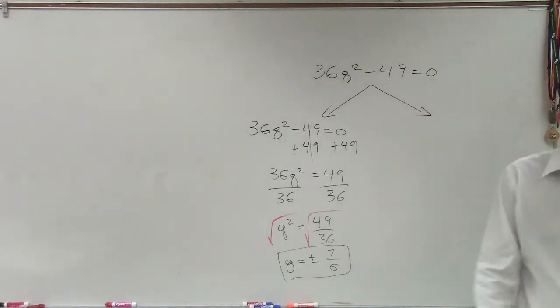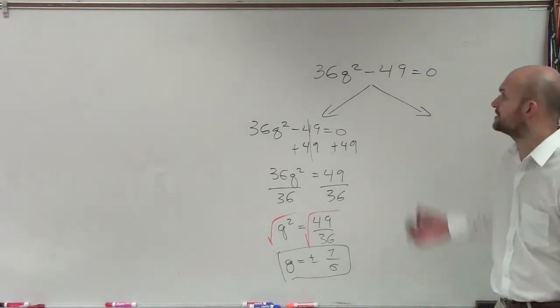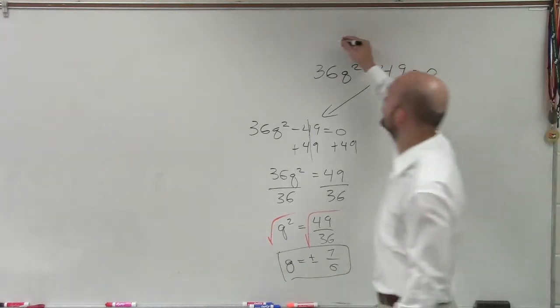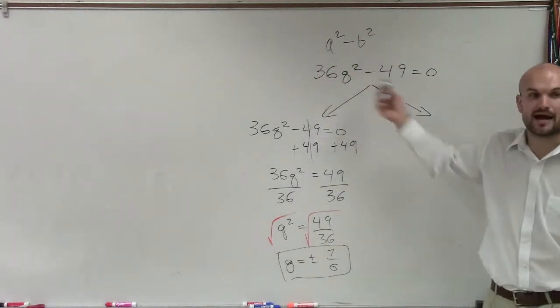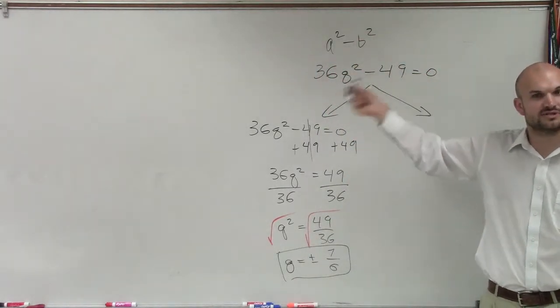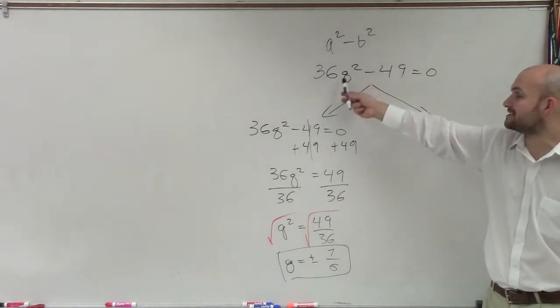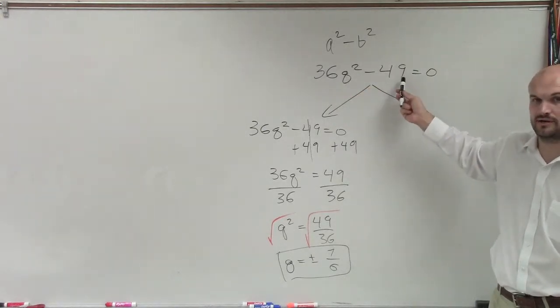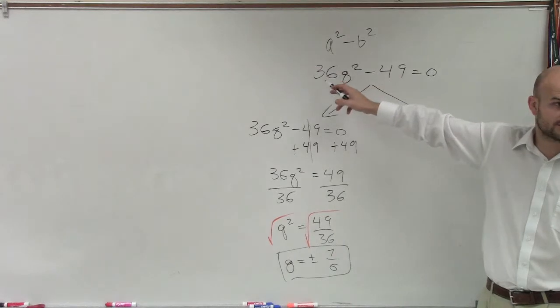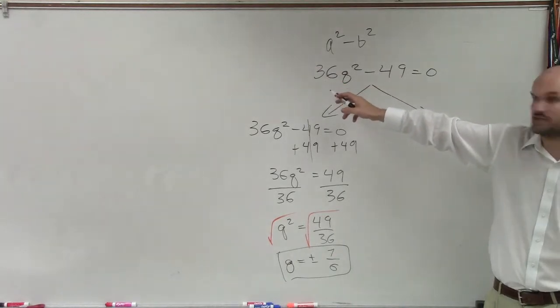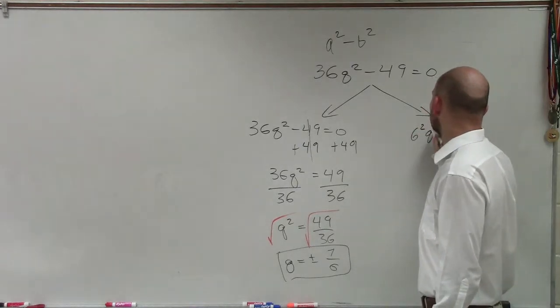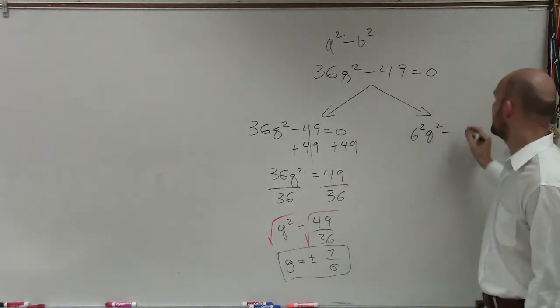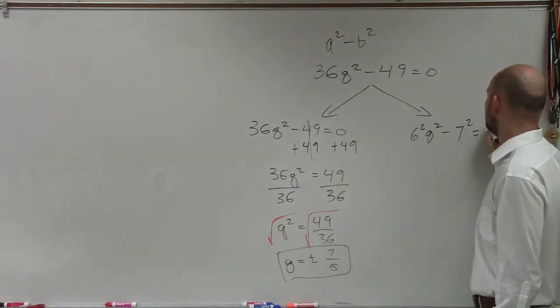Now there's another thing that we need to look at. There's another way to do this. Because, ladies and gentlemen, I showed you difference in two squares can be written as a squared minus b squared. So I need to determine, can I rewrite this as a term squared minus another term squared? So we need to look at, say, is 36 a squared number? Yeah, we can rewrite it as 6 squared. And q squared is obviously a squared number. So we can say 6 squared times q squared minus 49 squared, which would be 7 squared, equals 0.